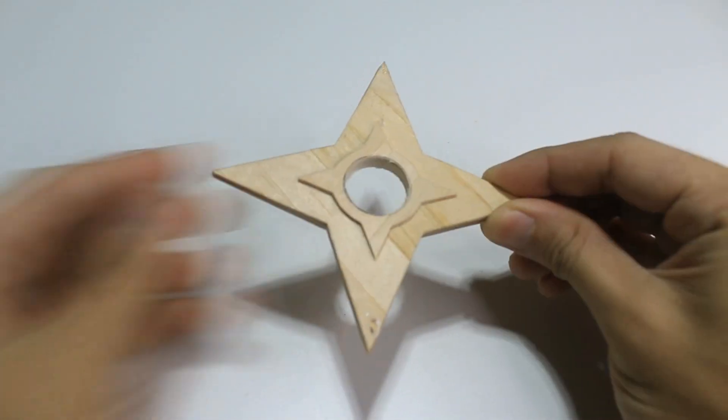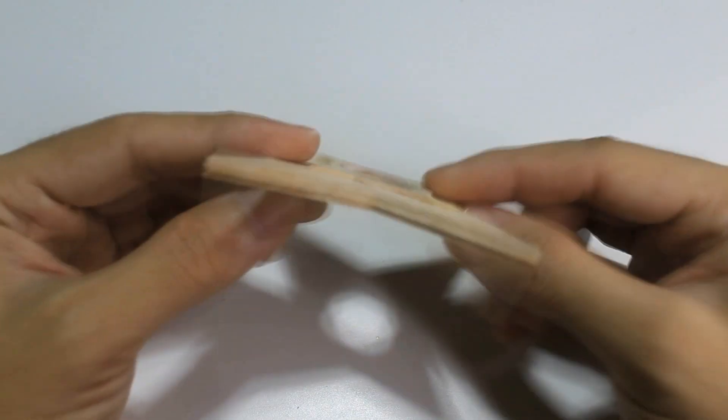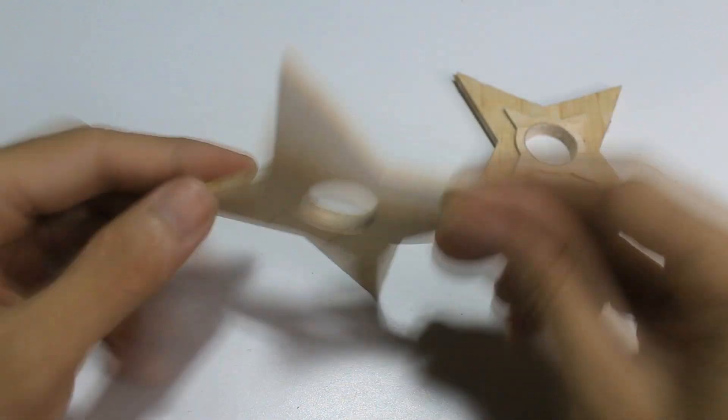Then sand the bottom part to make it straight and even. Be sure to make two of these for both sides of the shuriken.